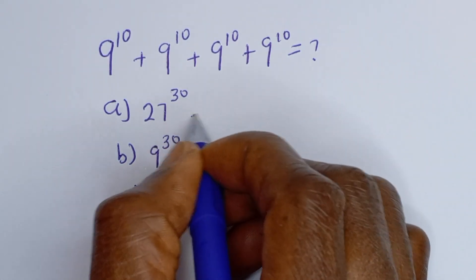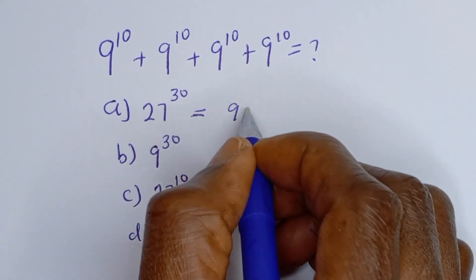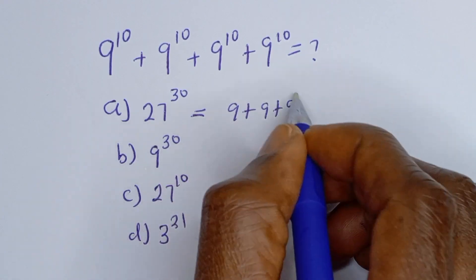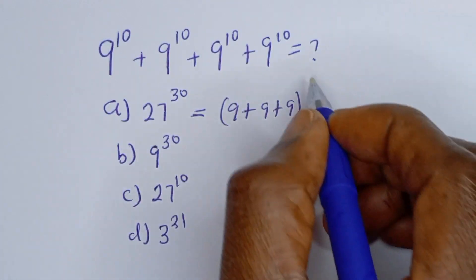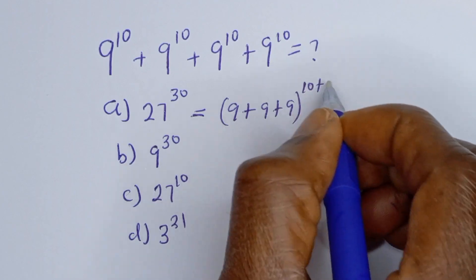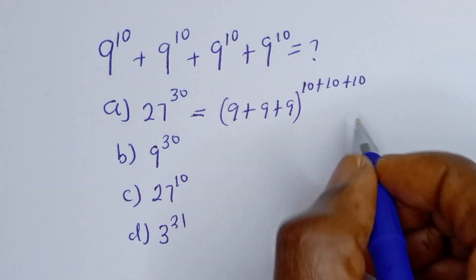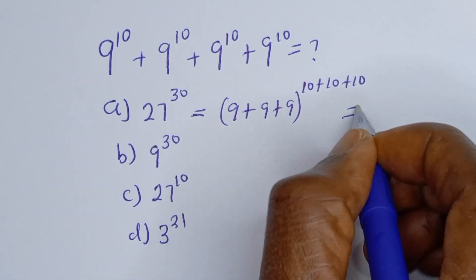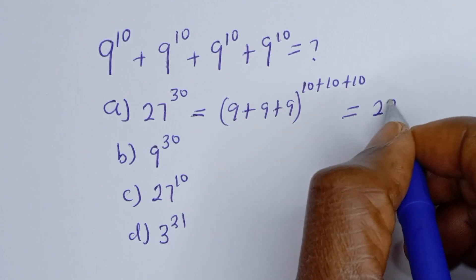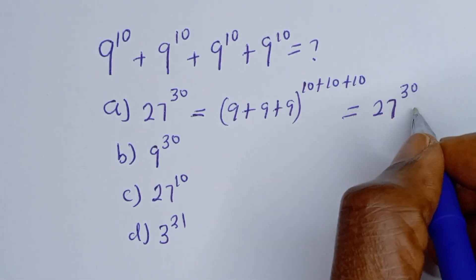Let's consider option A: 27 to the power of 30. The base would be 9 plus 9 plus 9, and the exponent would be 10 plus 10 plus 10, giving 27 to the power of 30.